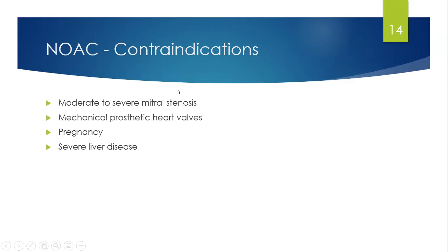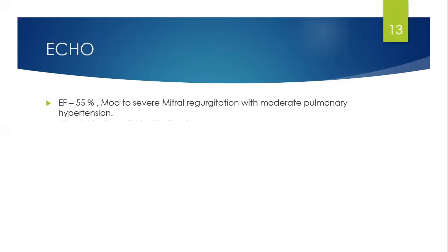Other NOAC contraindications: mechanical prosthetic valve, pregnancy, severe liver disease, and poor renal function (creatinine clearance below 15-30 depending on the NOAC chosen). Trials for dialysis patients are ongoing. The most commonly prescribed NOAC is apixaban — twice daily, dosed based on weight, creatinine clearance, and age. Full dose is 5 mg BD if meeting two of three criteria: weight over 60 kg, age under 85, adequate eGFR. Reduced dose is 2.5 mg BD. For compliance concerns, consider edoxaban (once daily, 30 or 60 mg) or rivaroxaban (20 or 15 mg based on renal function) or dabigatran (110 or 150 mg — a direct thrombin inhibitor with a reversal agent idarucizumab). NOACs also have andexanet alfa as a reversal agent for severe intracranial haemorrhage.